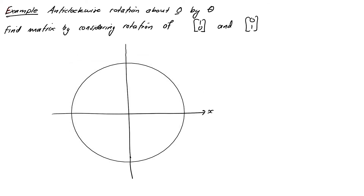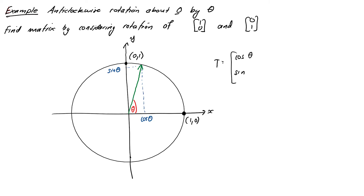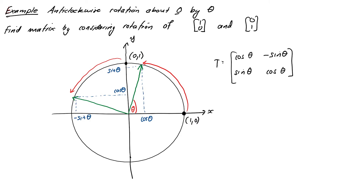Let's sketch axes with our vector rotated by angle theta. The vector (1,0) gets rotated to the position (cos θ, sin θ). Looking at the picture a little longer, we can also see that (0,1) gets rotated to (-sin θ, cos θ). So our rotation matrix has first column (cos θ, sin θ) and second column (-sin θ, cos θ).